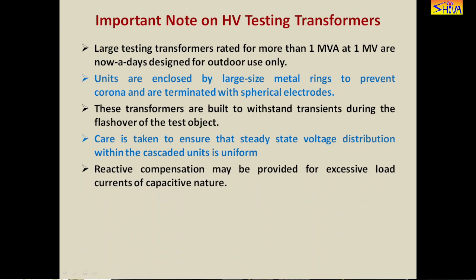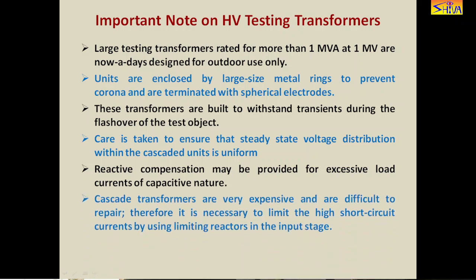Reactive compensation may be provided for excessive load currents of capacitive nature. The reason is that test objects are capacitive in nature, therefore they develop reactive power which needs to be compensated. Finally, cascaded transformers are very expensive and difficult to repair. Therefore it is necessary to limit high short circuit currents by using limiting reactors in the input stage to avoid damage to the transformers.